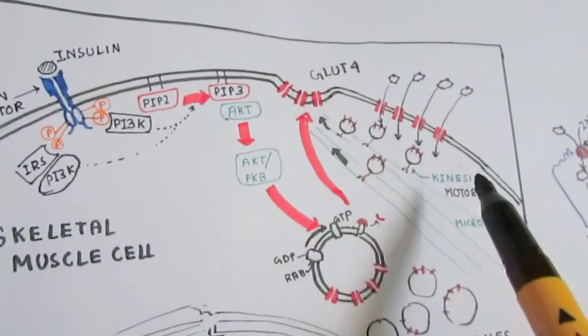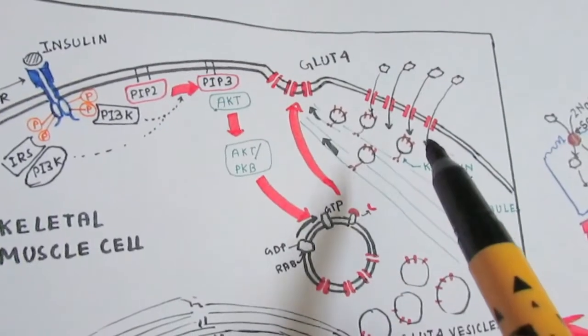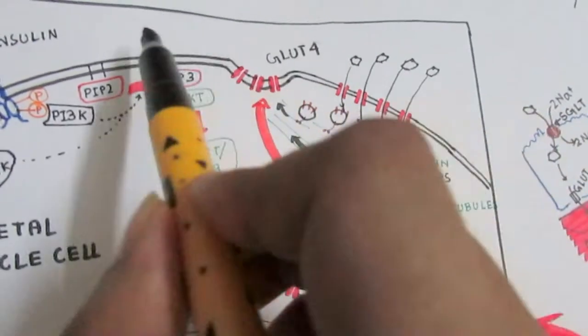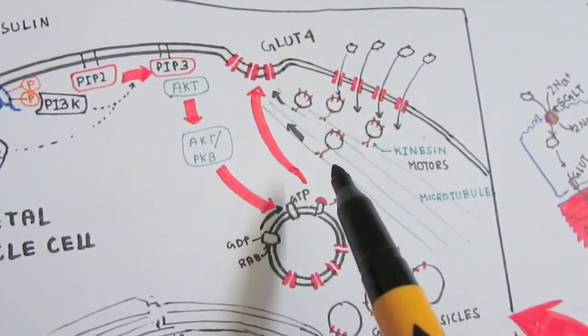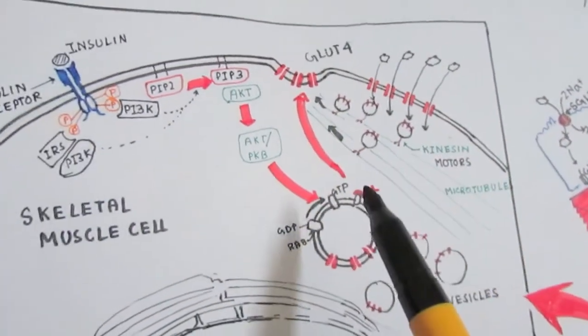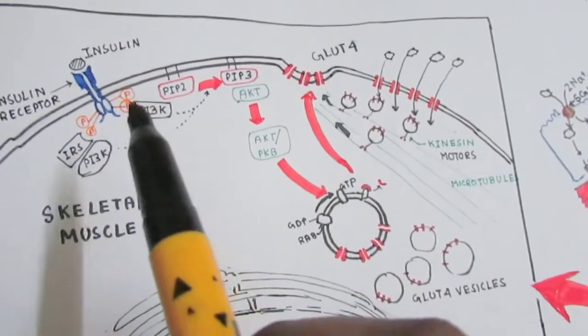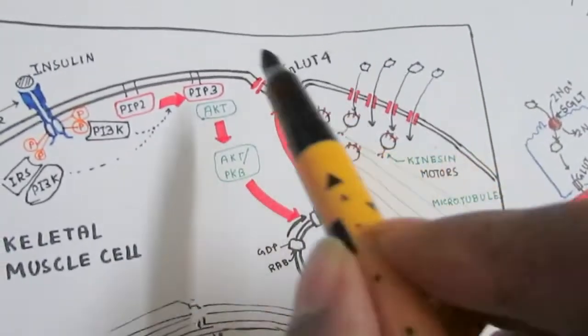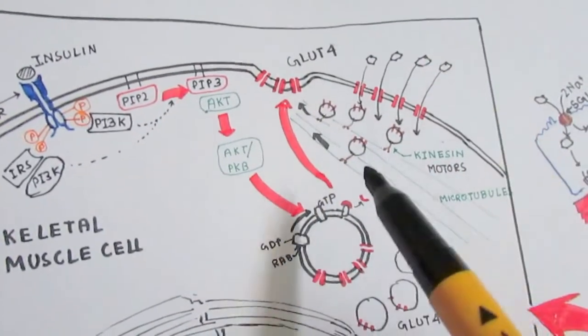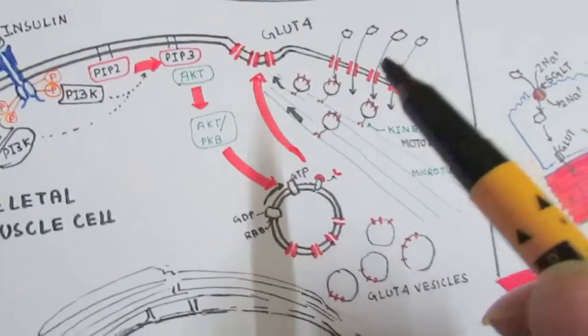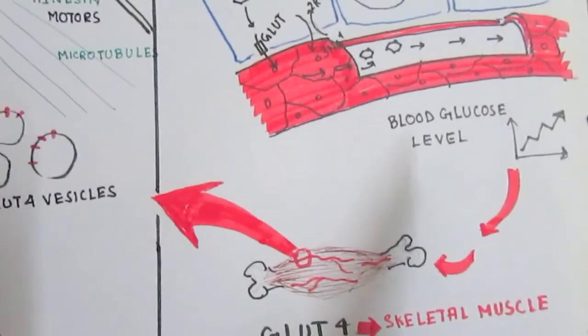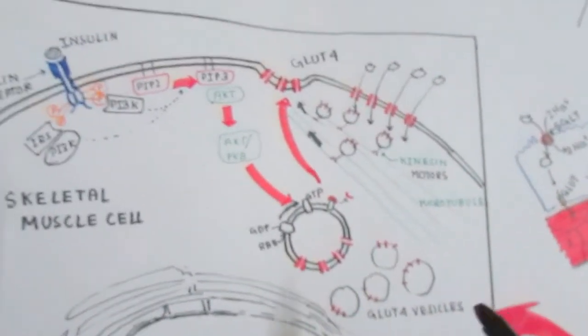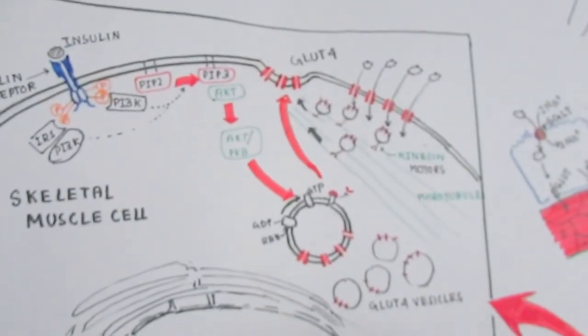If many of these transporters are not in the membrane, even if glucose is present in the peripheral region, the cell cannot uptake glucose and cannot utilize it. That happens in diabetes, where glucose is present in the peripheral area but the cells cannot utilize glucose. As a result, the blood glucose level is pretty high, and that leads to pathological conditions. Hope you enjoyed the video, thank you.